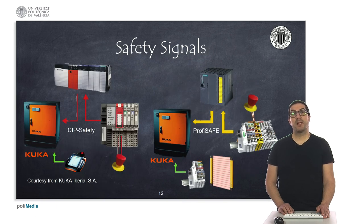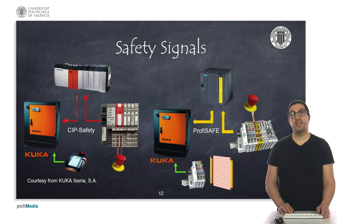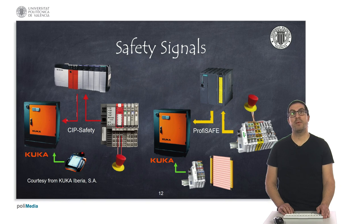Robot safety is a fundamental aspect that must be taken into account. Protocols and requirements must be met in order to stop the robot if necessary. Flexible manufacturing cells have elements to guarantee safety through digital signals and field buses. The robot can be stopped from the control pad, but also from signals coming from safety barriers or emergency buttons, among others.